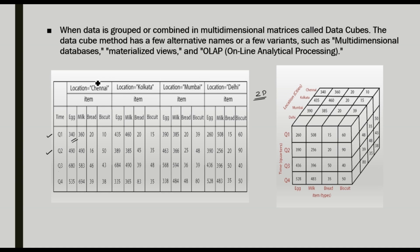By adding the location dimension, we create a 3D data cube. Imagine four pieces of paper stacked to form a cube — that is our data cube. In this data cube, there are more than two dimensions: time, item, and location. For example, looking at the number 260 in the cube, it represents three dimensions: it is the sale of the item egg in quarter one at the location Delhi.